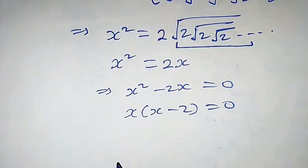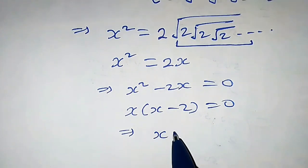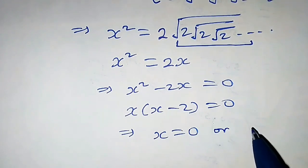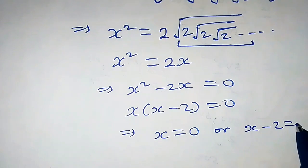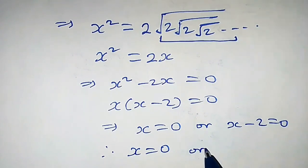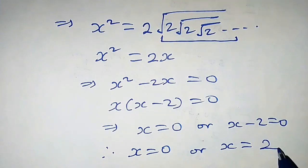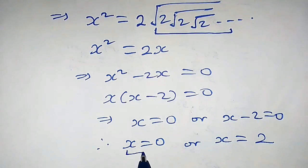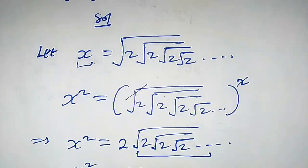So this implies that x equals 0 or x minus 2 equals 0. Therefore, x equals 0 or x equals 2. For this case, we have x equals 0, but don't forget our assumption.